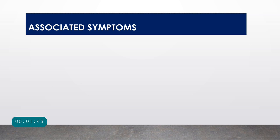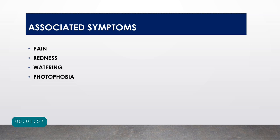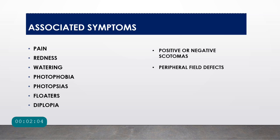Always ask about certain associated symptoms regarding the vision loss — whether it is associated with pain, redness, watering, photophobia, photopsia (flashes), floaters, diplopia (double vision), positive or negative scotomas, and peripheral field effects. All these associated symptoms should be covered in your history taking.